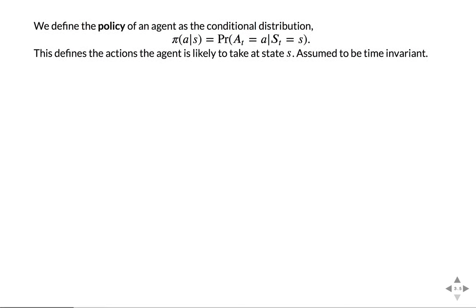Next we need to define what the policy is. Now that we can perform actions, we define this policy function — it's actually a conditional probability: the probability that we'll select action a at a specific state s. This basically determines what your agent will do. The policy is how we will behave: when the agent reaches a state s, he has some conditional probability over the action space.